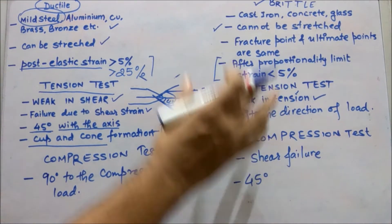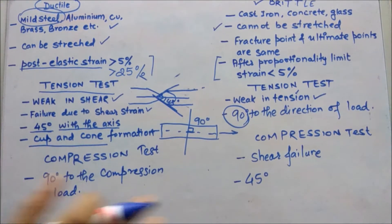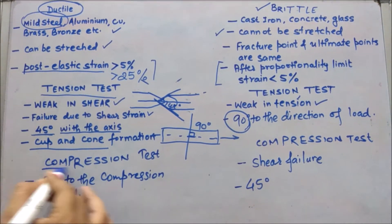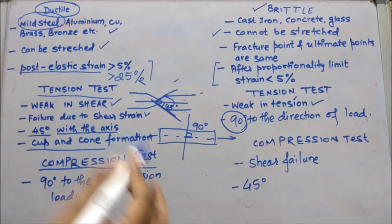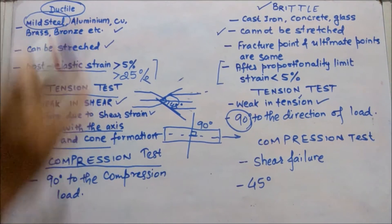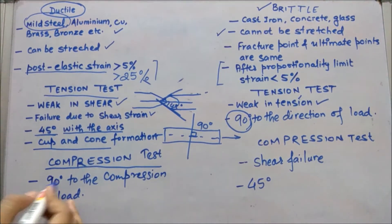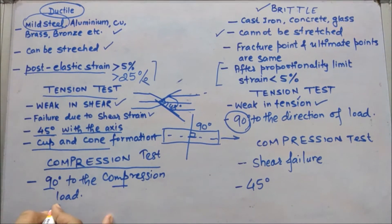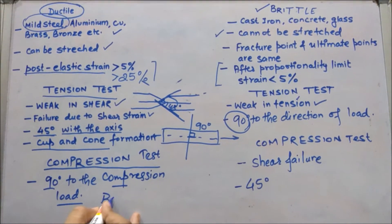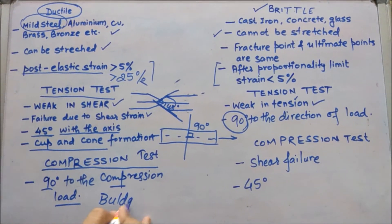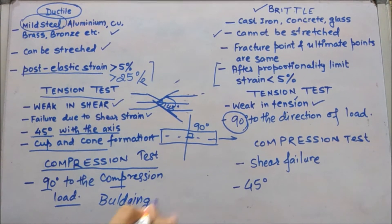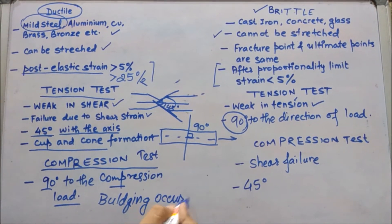In the compression test, ductile material fails at 90 degrees to the compression load. The phenomenon of bulging often occurs and they fail at 90 degrees.